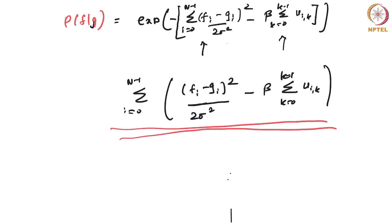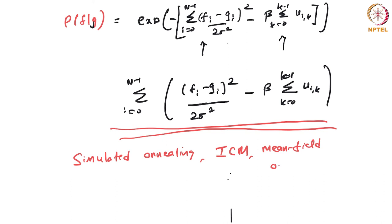We have now made this into an optimization problem. There are many techniques for this: simulated annealing, ICM (iterated conditional modes), and mean field annealing. The reason there are so many techniques is because this optimization problem is hard — it comes primarily from the clique potential term, and the size of the problem is large since we estimate F pixel by pixel.